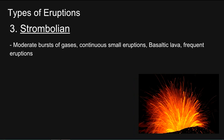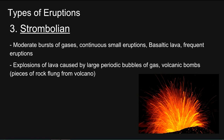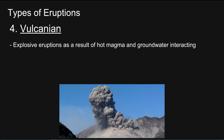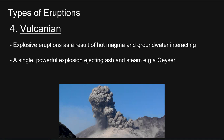Strombolian: moderate bursts of gases, continuous small eruptions, basaltic lava, frequent eruptions. Explosions of lava caused by large periodic bubbles of gas, and you get volcanic bombs — pieces of rock flung from the volcano. Height of the eruption column is less than 10 km. Fourth, Vulcanian: explosive eruptions as a result of hot magma and groundwater interacting. A single powerful explosion ejecting ash and steam, for example a geyser. Height of eruption column is less than 20 km.